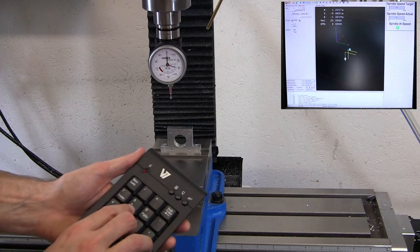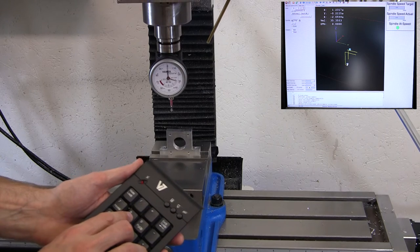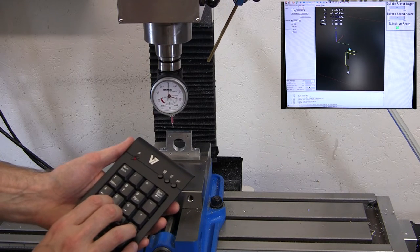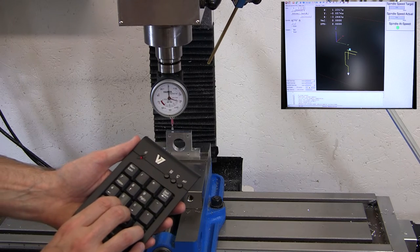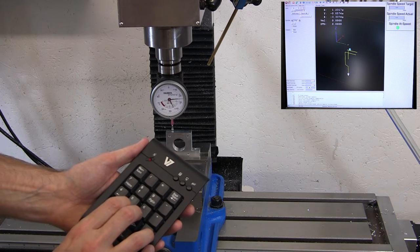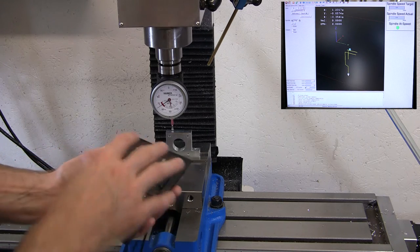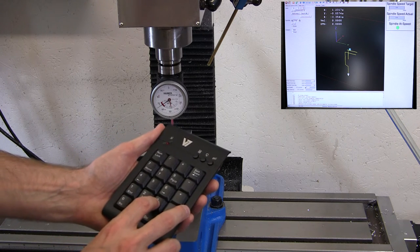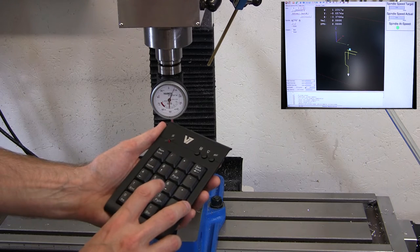So if we were to touch off on the top of this part, you come down to the part at one jog rate, go back to the keyboard, lower the jog rate, and then proceed at that slower jog rate.